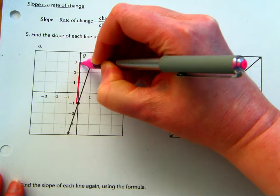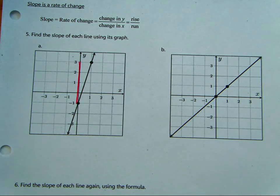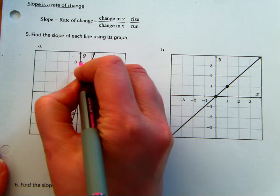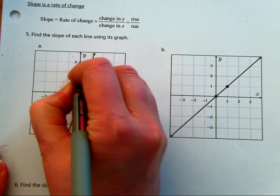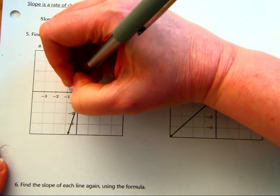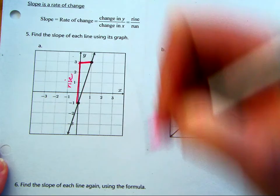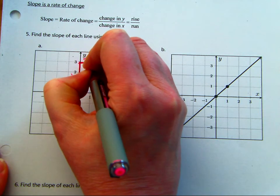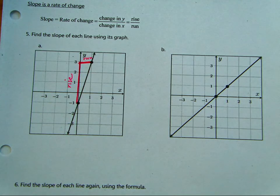On your paper, draw in a triangle. I want you to draw the rise, and then draw the run. Because once you see this, it'll help you a lot. Think of a slope as a triangle. If we're given a graph, it's awesome. We just have to count the rise and the run.